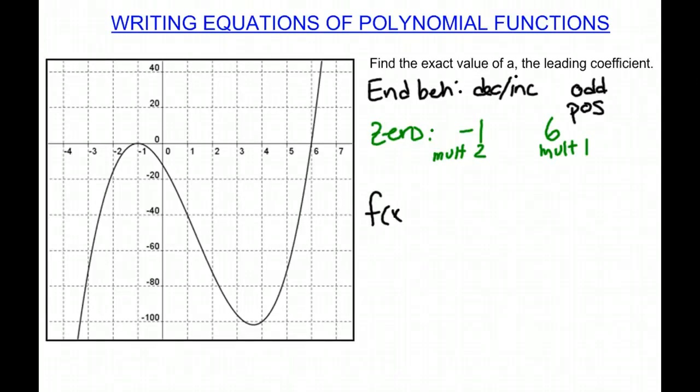When we say f(x) is equal to some value a that we don't know yet, our leading coefficient, then we have x plus 1. Again, we're taking the opposite sign, and it is to the second power, because it has a multiplicity of 2, and x minus 6, multiplicity of 1, so we don't need to write that in.